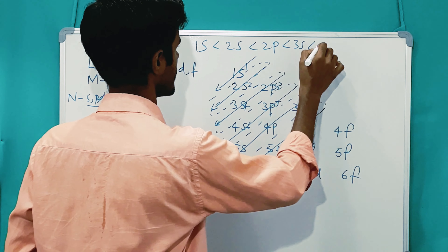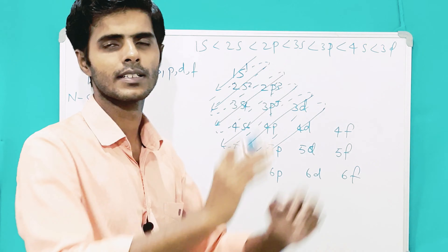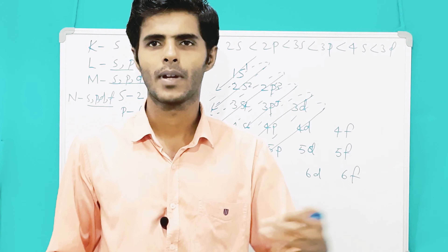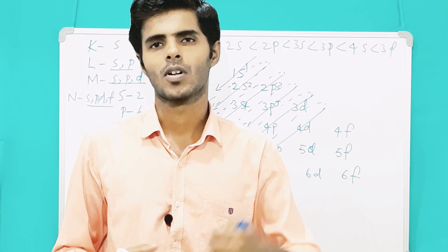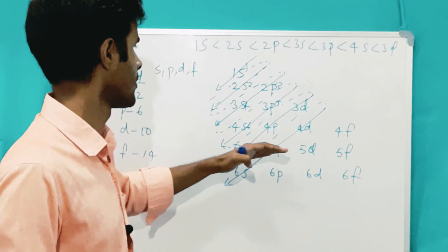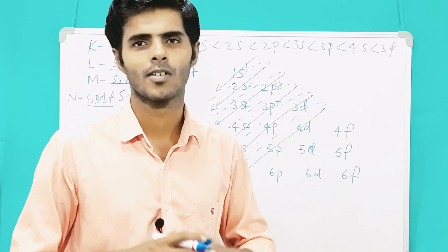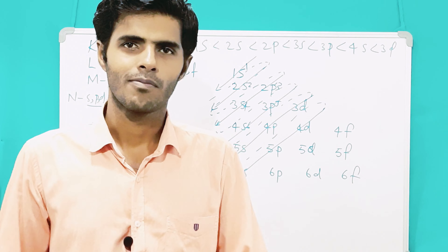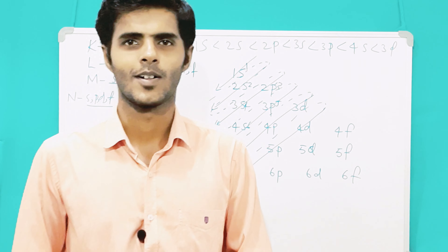The order comes out as: 1S, 2S, 2P, 3S, 3P, 4S, 3D, and it goes on like that. So if you are not remembering where an electron should be placed for a particular element with many electrons, you can draw this diagram and then you will be able to determine where an electron is placed and which subshell has lesser or higher energy. We will be working on many problems based on this in the next classes. Thank you.